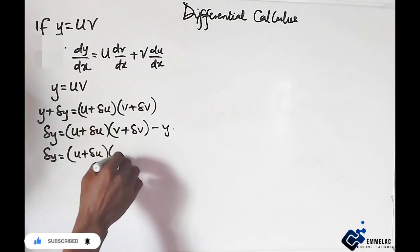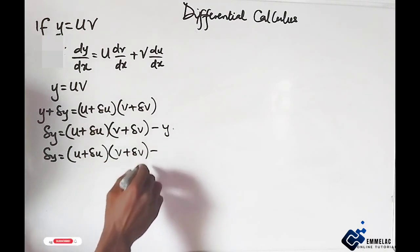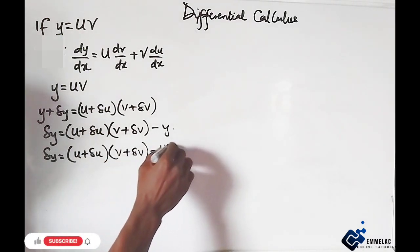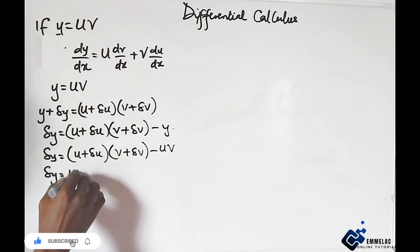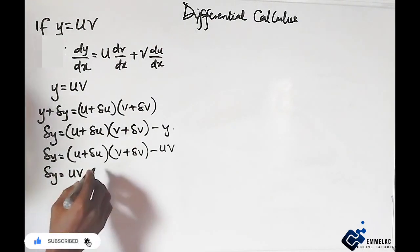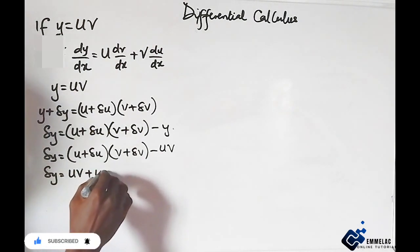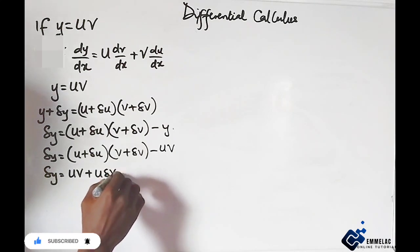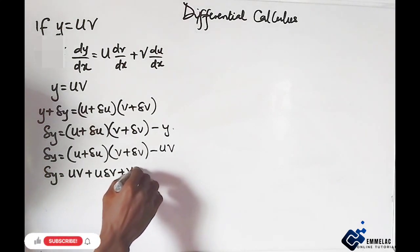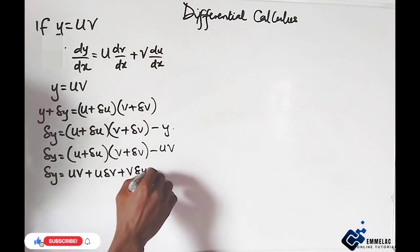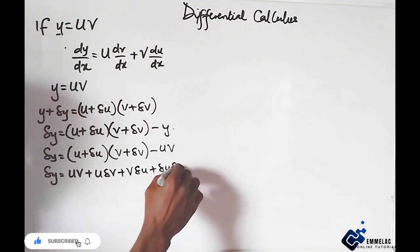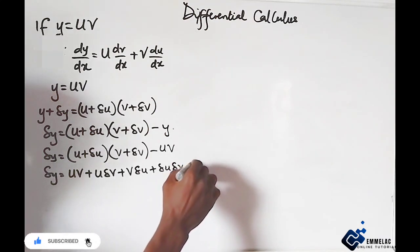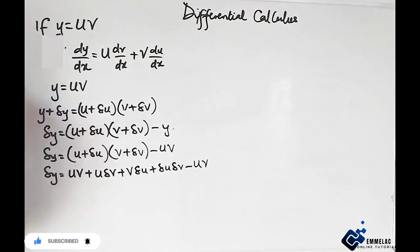Now if I open the bracket here, we have change in y equals uv, plus u change in v, plus v change in u, plus change in u change in v, then minus uv.